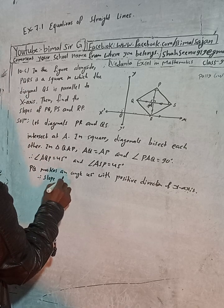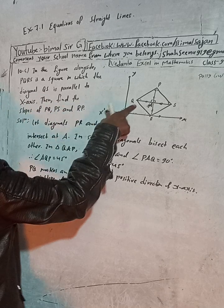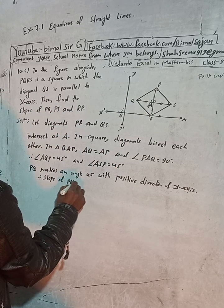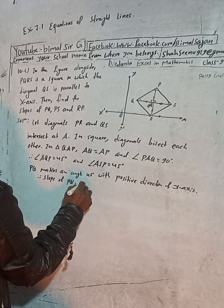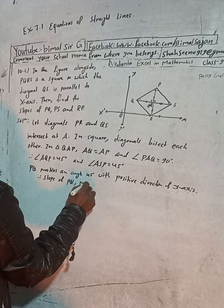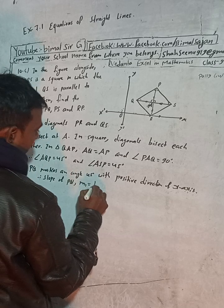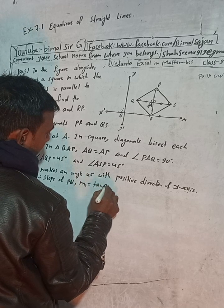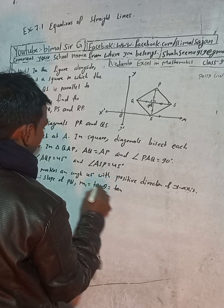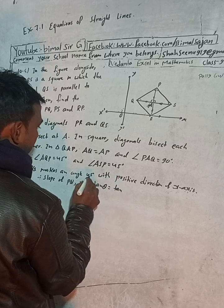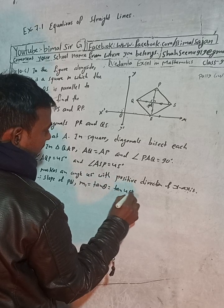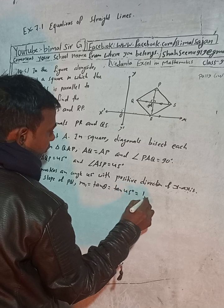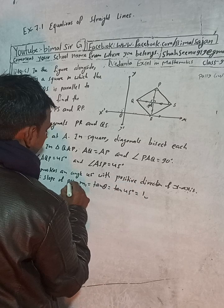Therefore, slope of PQ — indicated as m1 — is equal to tan θ, where θ is 45 degrees. tan 45° equals 1. So the slope of PQ is 1.